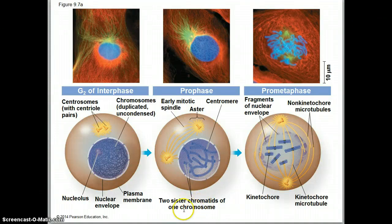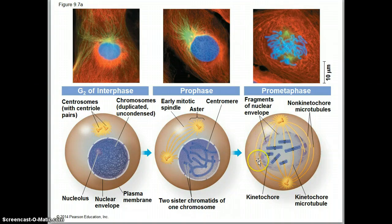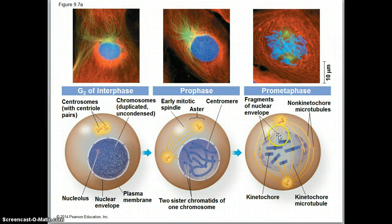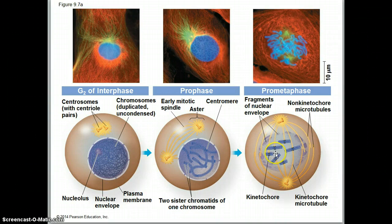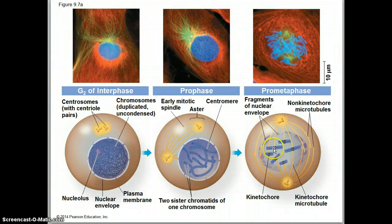Note that two sister chromatids are going to be part of one chromosome. During prometaphase, you can see that the centrosomes have traveled to opposite sides of the cell — the poles. Those mitotic spindles are stretched out and starting to connect with all of the sister chromatids. They connect at the very center at the place called the kinetochore — a protein complex where those spindle fibers will connect at the center of the sister chromatids.